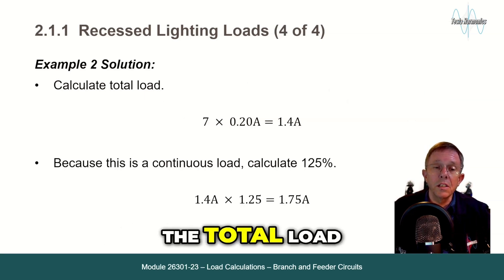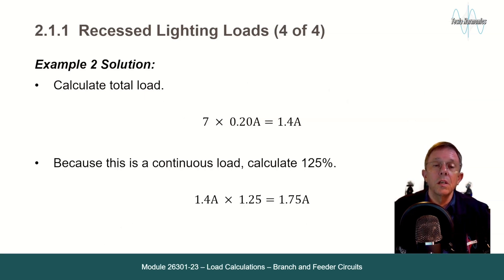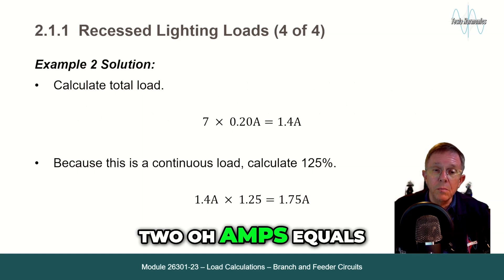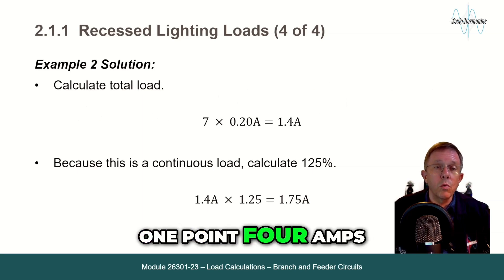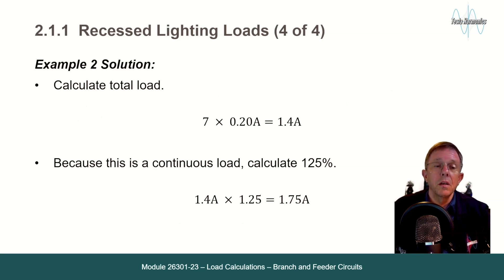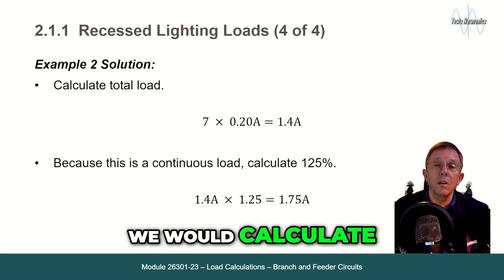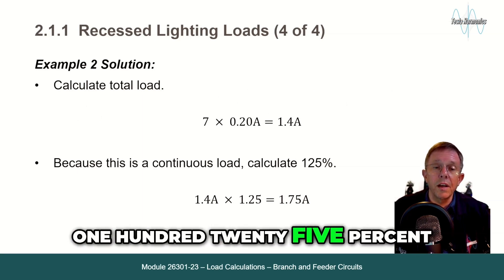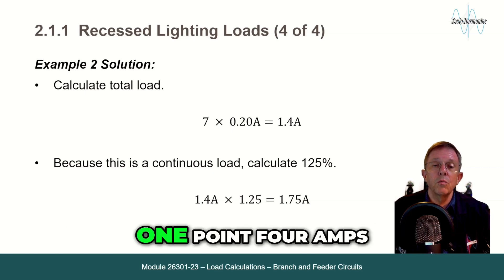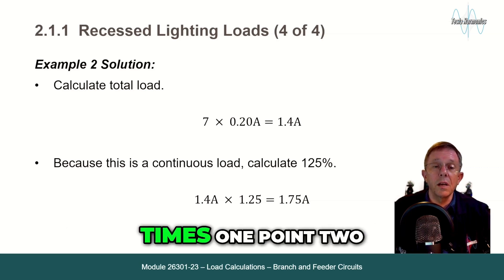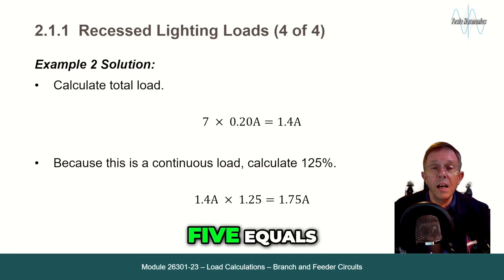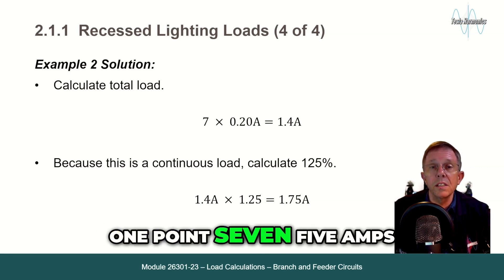We would calculate the total load: 7 times 0.20 amps equals 1.4 amps. Because this is a continuous load, we would calculate 125%. 1.4 amps times 1.25 equals 1.75 amps.